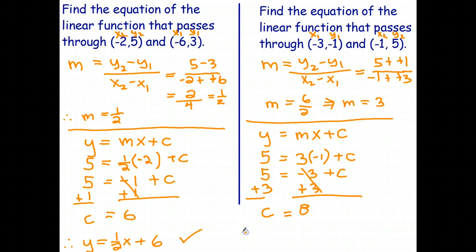So therefore, the equation of the line that passes through these two points is y equals gradient is 3, so 3x and the y-intercept is 8 plus 8. So a little bit of algebra involved in that, but the process is the same for each question. So get out your textbook, find some questions like this, and just practice, practice, practice. Okay, thank you very much.